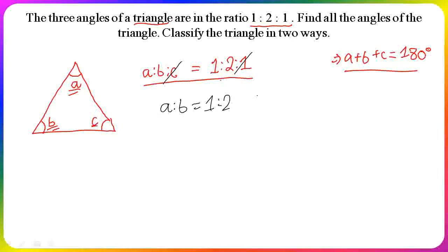Using the formula that the product of extremes equals the product of means, we get 2A = B. Therefore, A = B/2.